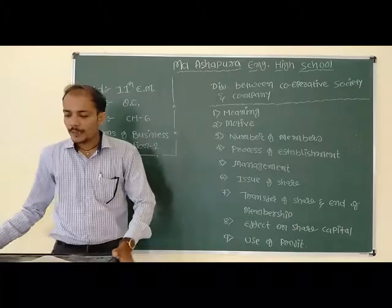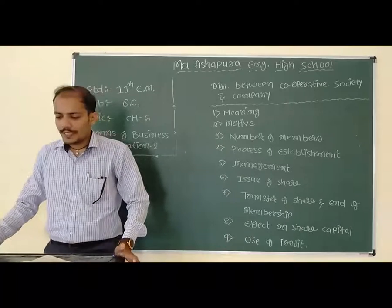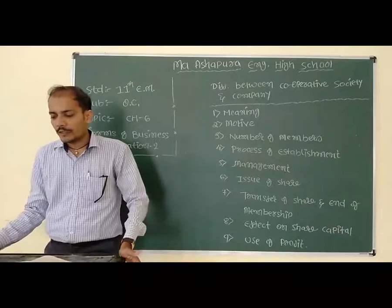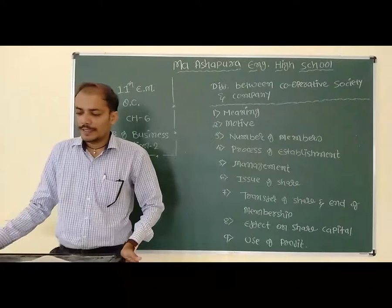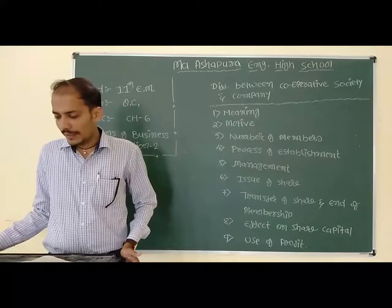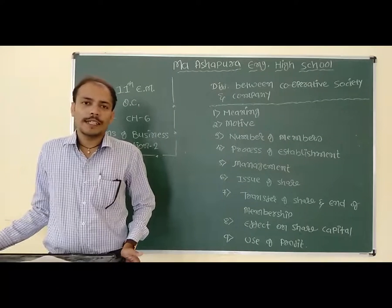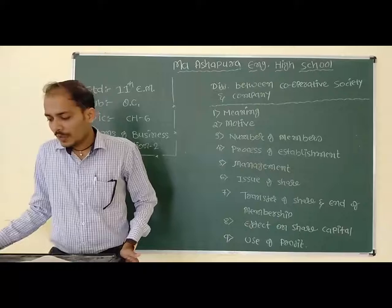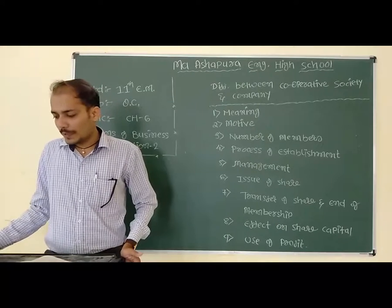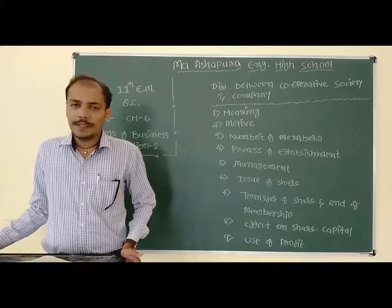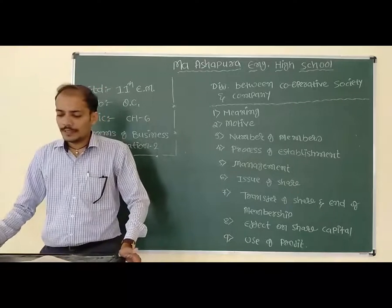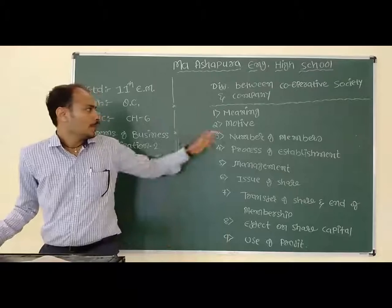First point: cooperative society — it is a voluntary association of persons on the basis of equality to improve their economic condition. Cooperative society mein voluntary members join hote hai, aapne khud ke upliftment ke liye. Company — it is a voluntary association of persons to earn profit through a legal business. Company ke andar members profit ke liye jodte hai.